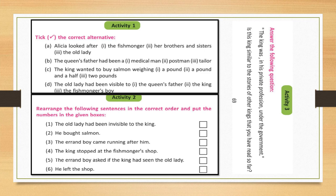Activity one: Tick the correct alternatives. A: Alicia looked after — the fishmonger / her brothers and sisters / the old lady. B: The queen's father had been a — medical man / postman / tailor. C: The king wanted to buy salmon weighing — a pound / a pound and a half / two pounds. D: The old lady had been invisible to — the queen's father / the king / the fishmonger's boy. Go through the text and try to answer the questions.